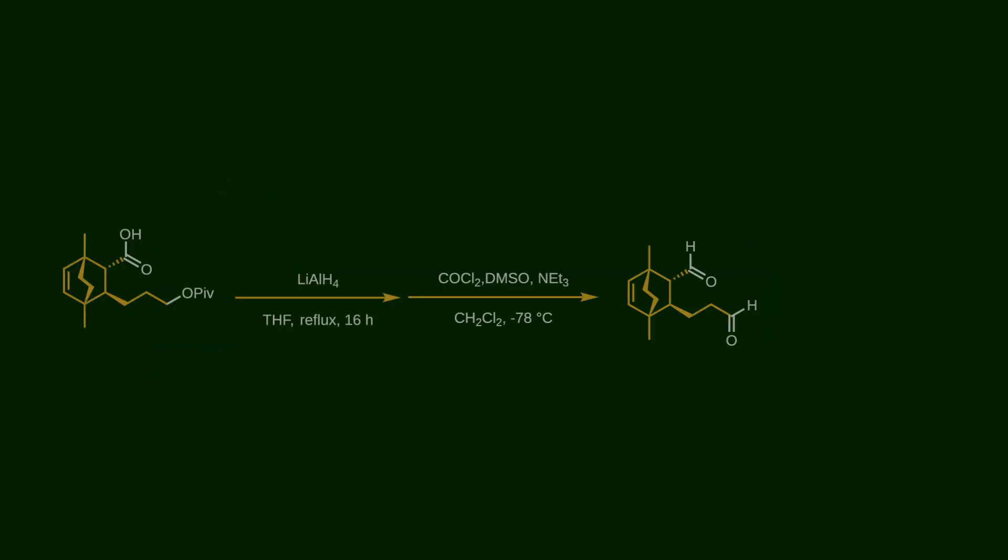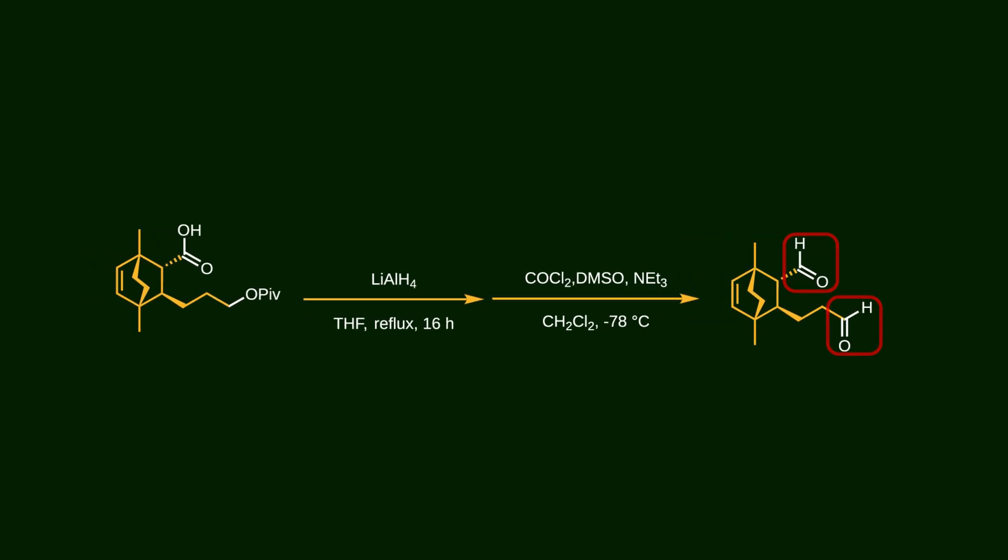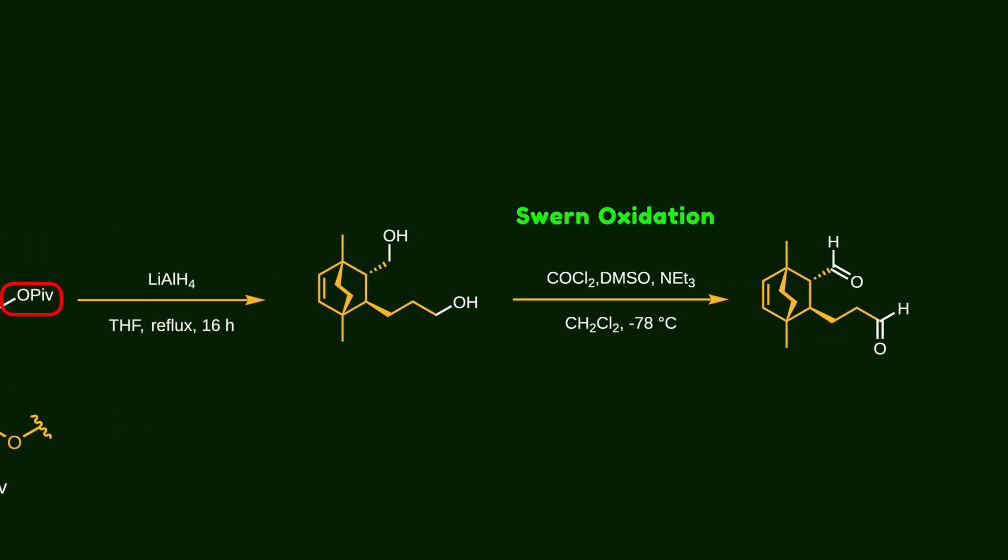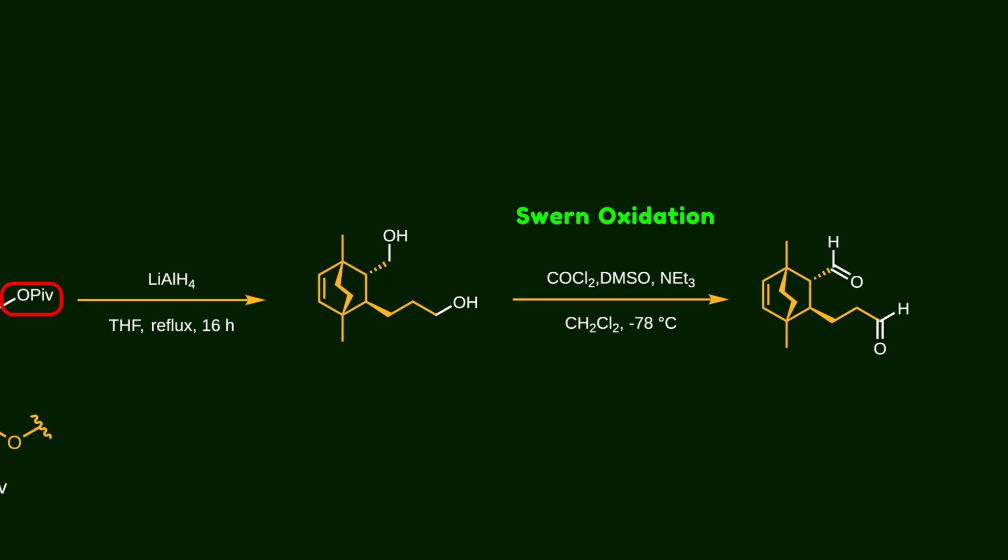In the following steps, two new aldehyde groups are introduced into the molecule. This intermediate contains both a carboxylic acid and a protected alcohol. Lithium aluminum hydride is strong enough to reduce both of these functional groups, converting them into the corresponding alcohols. After that, the two primary alcohols undergo Swern oxidation to form the corresponding aldehydes.